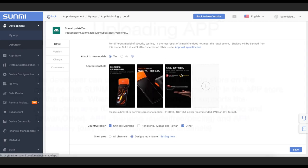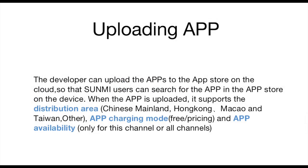First, uploading an app. The developer can upload apps to the app store on the cloud, so that Sami users can search for the app in the app store on the device. When the app is uploaded, it supports the distribution area: mainland China, Hong Kong, Macau, Taiwan, and overseas. App charging model: free or pricing. App availability: only for this channel or all channels.